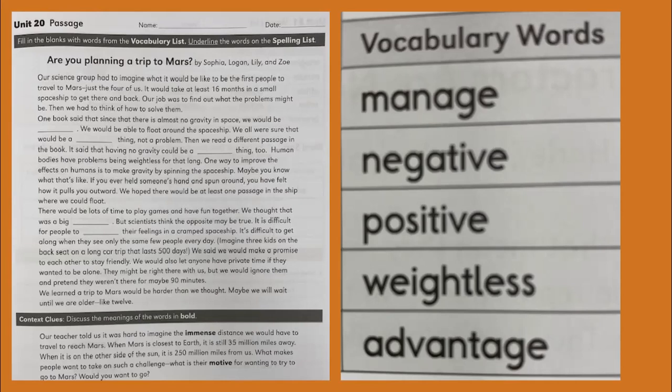In this next passage, look for the bold words. Our teacher told us it was hard to imagine the immense distance we would have to travel to reach Mars. When Mars is closest to Earth, it is still 35 million miles away. When it is on the other side of the sun, it is 250 million miles from us. What makes people want to take such a challenge? What is their motive for wanting to try to go to Mars? Would you want to go?